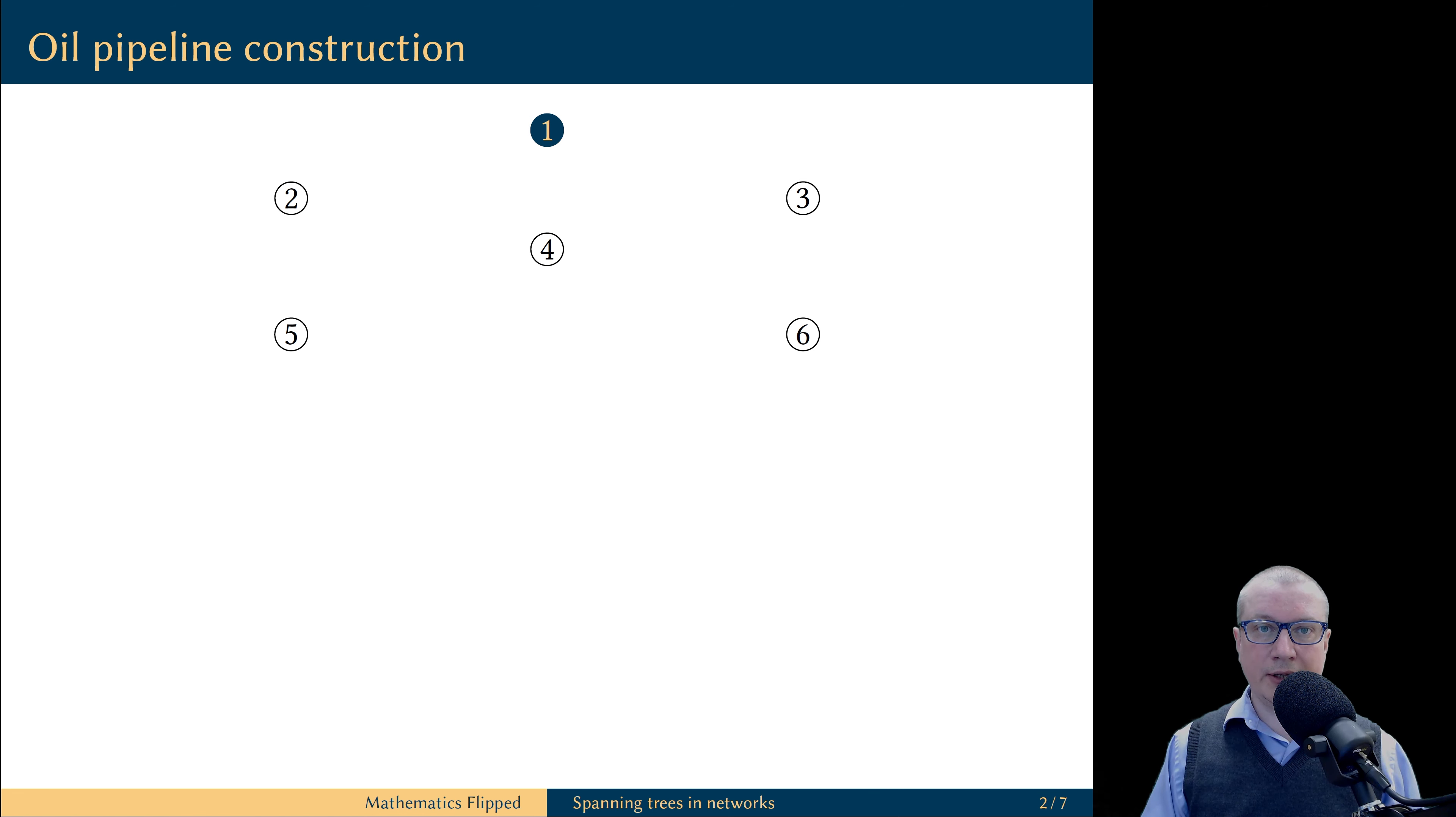And we have one refinery, it is labeled by 1. We would like to construct a network of pipelines which would allow oil to flow from each of the oil fields to the refinery.